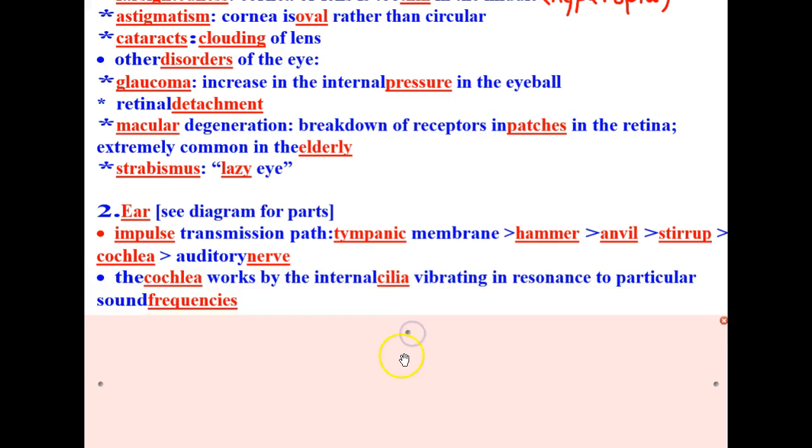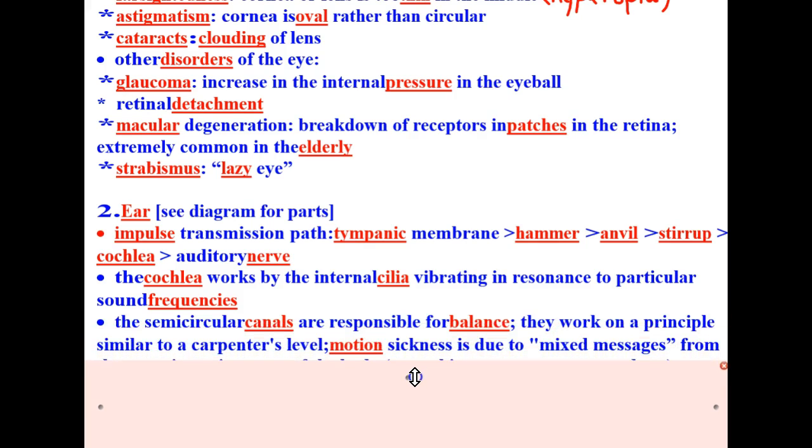The cochlea works by the internal cilia, which are little tiny hairs vibrating in resonance to particular sound frequencies. The semicircular canals are responsible for balance. They work on a principle similar to a carpenter's level. Motion sickness is due to mixed messages from the proprioceptive parts of the body, the eyes, the skin, pressure sensors, and ear.